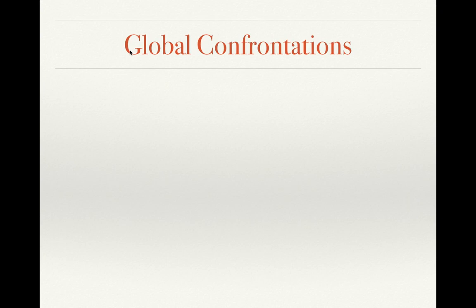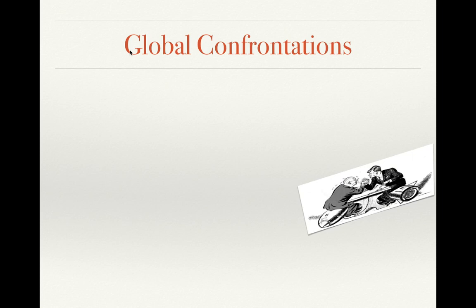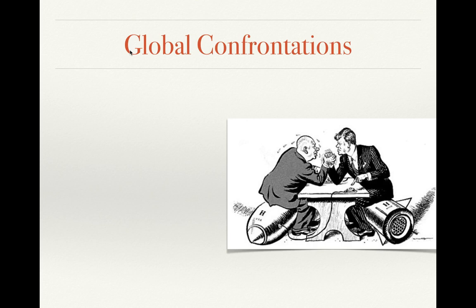In this cartoon, you'll recognize Kennedy on the right, arm wrestling the man on the left who is apparently about to blow up by hitting the nuclear button — he's sitting on the hydrogen bomb. That is Nikita Khrushchev, the leader of the Soviet Union. Sometimes people refer to him as the premier or the general secretary of the Communist Party, also as the chairman. He's going to play a central role in a lot of what we're about to see.